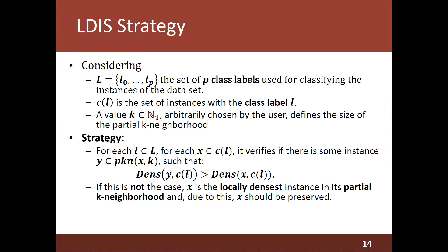Considering this, now we can discuss the LDIS strategy. Basically, for each distinct class label L in the dataset, for each instance that belongs to the class L, the algorithm verifies if there is some instance Y within the partial K neighborhood of X whose local density, considering the set of instances of the class L, is greater than the local density of X. If this is not the case, X is the locally densest instance in its partial K neighborhood, and due to this, X should be preserved in the final dataset.